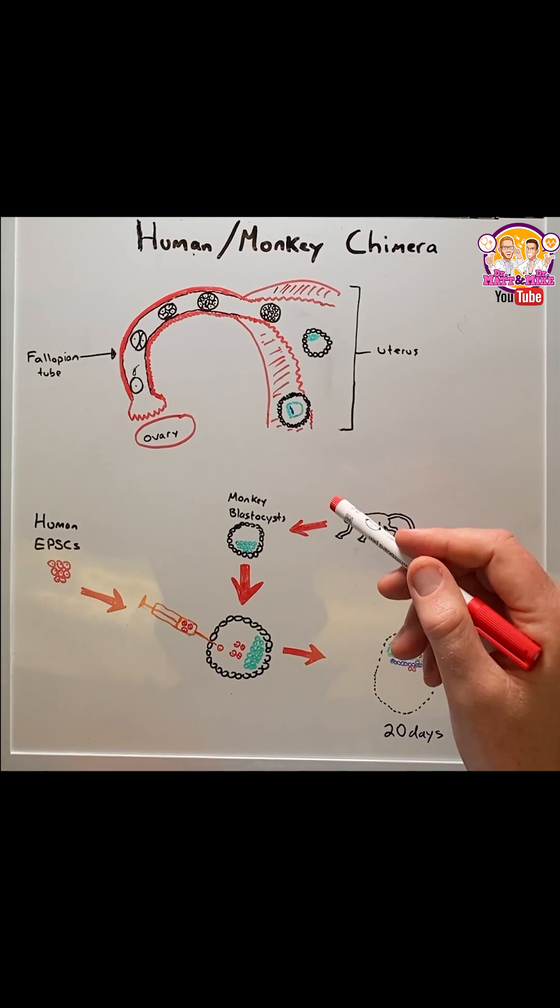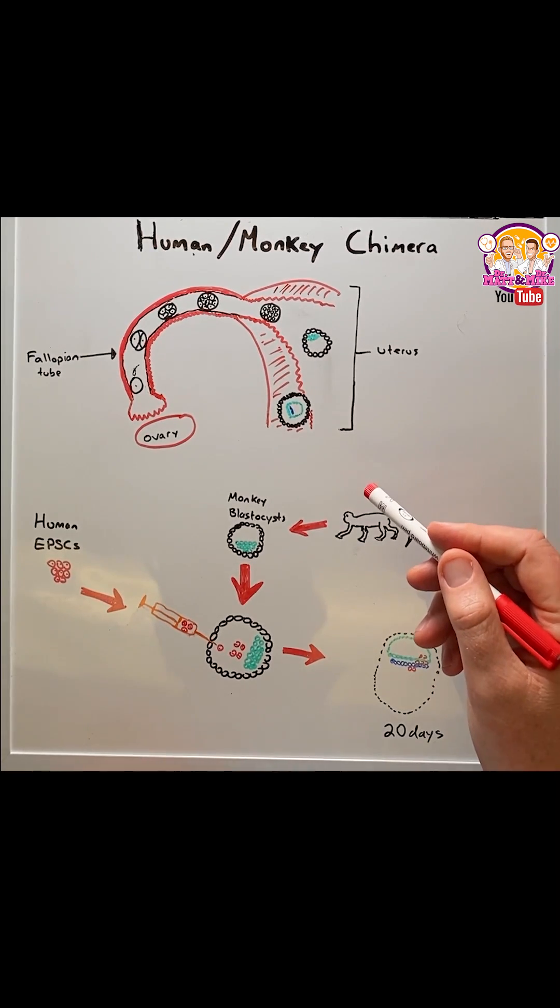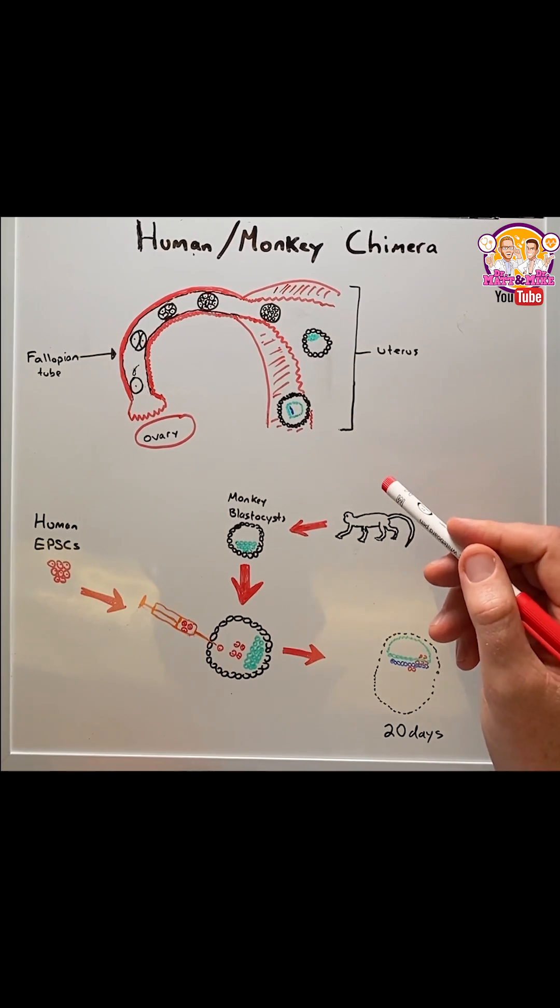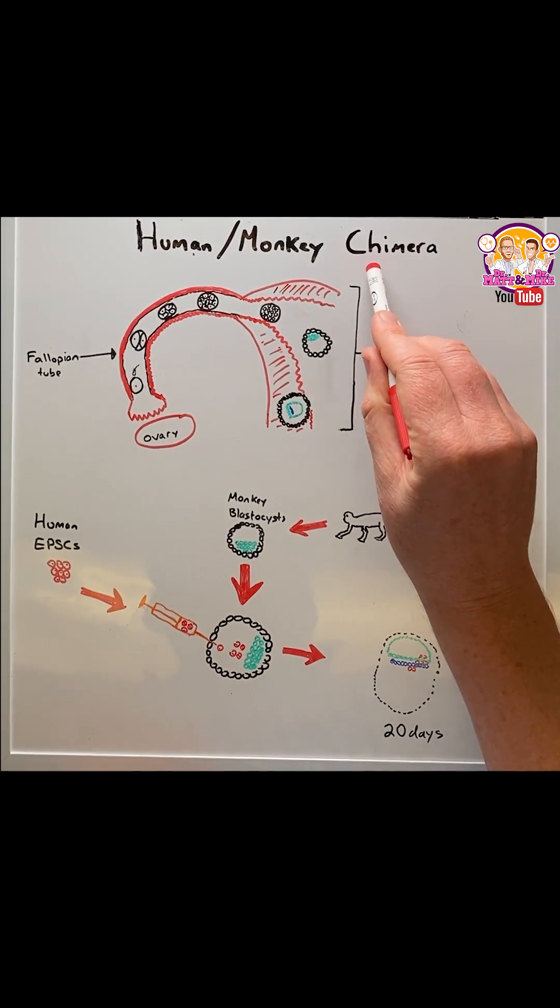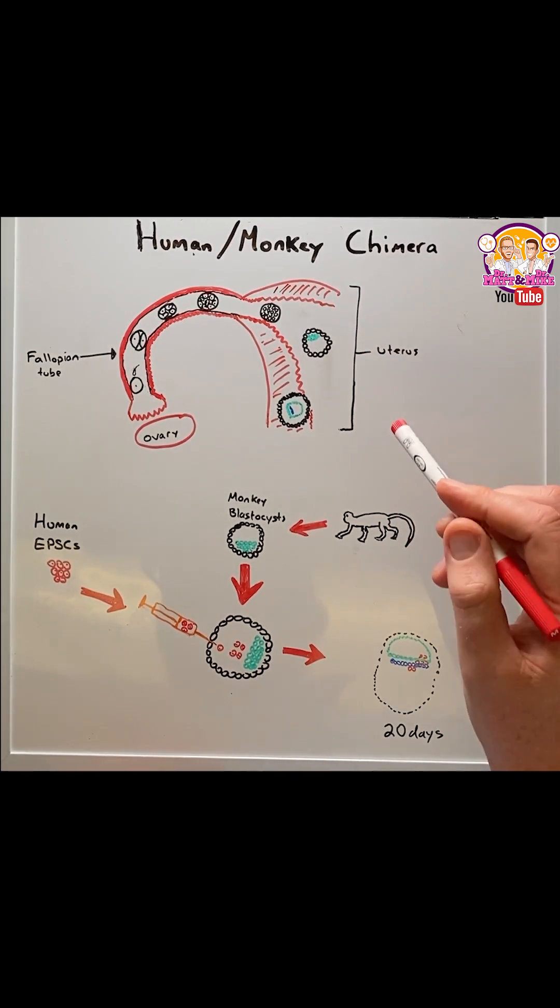In recent years some researchers have been adding human stem cells to animal embryos to see if they may eventually make human organs for transplantation. These are known as chimeras. Let's see how this works.